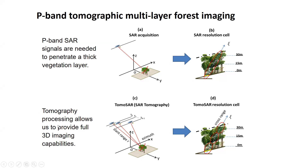Unlike traditional SAR, tomography has been demonstrated to improve SAR capability in many applications, particularly in forest areas. This is because multiple SAR acquisitions with a slightly different look angle over the same area can allow us to quantify the three-dimensional forest reflectivity.